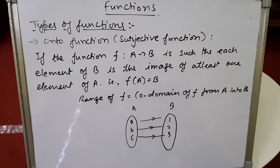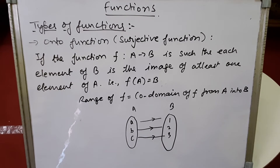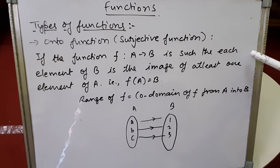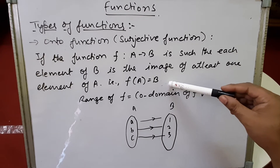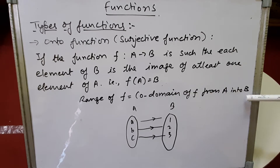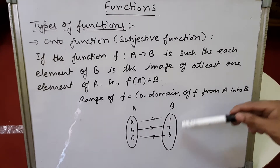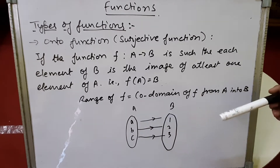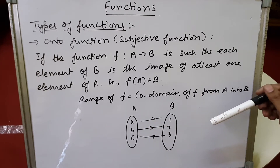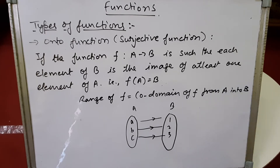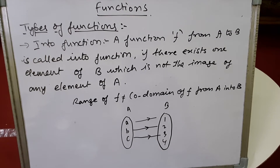Next is the onto function, also called the surjective function. A function f: A → B is onto if each element of B is the image of at least one element of A — that is, f(A) = B, or equivalently, the range of f equals the co-domain B. We can see that every element of B has at least one pre-image in A, so this is an onto function.